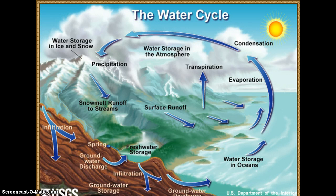Precipitation is water released from clouds in the form of rain, freezing rain, sleet, snow, or hail. (USGS 2014.) Precipitation is the primary means of delivery of atmospheric water to the Earth, and most precipitation falls as rain.